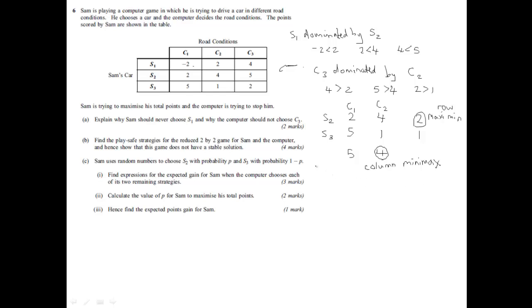So that's the first part. It then says, hence show that the game does not have a stable solution. Well, no or not stable solution as row maximin doesn't equal column minimax. And I suppose you probably don't need 2, but that's 4. That was 2, wasn't it? 2 obviously doesn't equal 4. So that's that bit done.